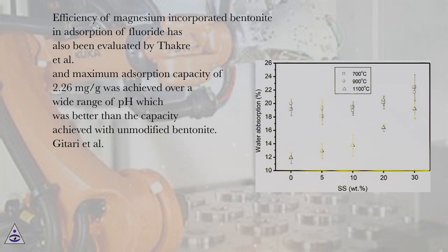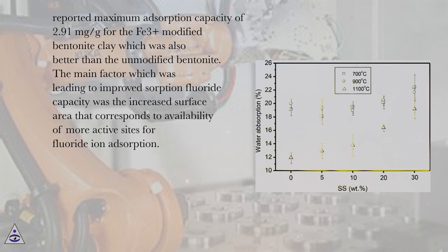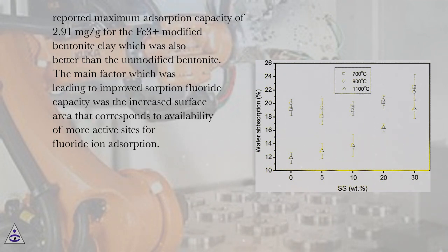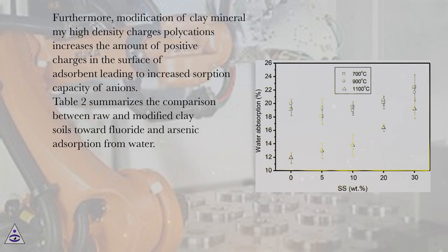Jatari et al. reported a maximum adsorption capacity of 2.91 mg/g for Fe³⁺-modified bentonite clay, which was also better than the unmodified bentonite. The main factor leading to improved fluoride sorption capacity was the increased surface area, corresponding to availability of more active sites for fluoride ion adsorption. Furthermore, modification of clay minerals with high-density charged polycations increases the amount of positive charges on the surface of the adsorbent, leading to increased sorption capacity of anions.